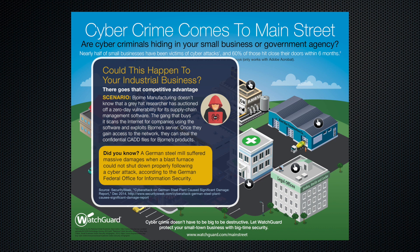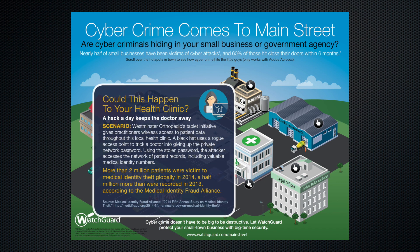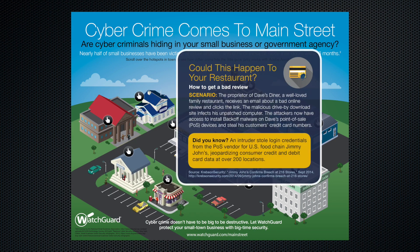This pop-up here shows data about Bjorn Manufacturing Company, discussing the security hack — a zero-day vulnerability in supply chain management software. Rolling over each hotspot reveals all the content and data you can interact with, which is pretty cool because you can absorb it one piece at a time instead of one long infographic. You can see the little graphics inside the pop-ups — like a credit card with a bug on it — created in Illustrator. The box itself is created in InDesign with all the typography, making it very easy to edit and make changes.